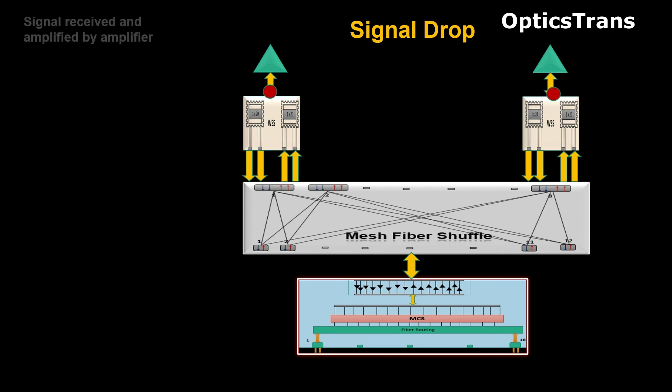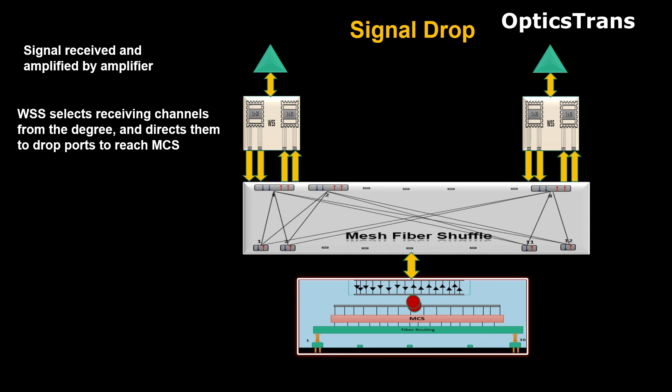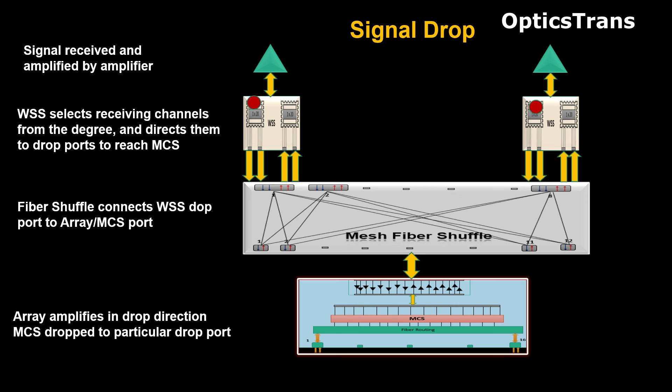Similarly in the drop direction, signal is received at the amplifier, and WSS selects channels and directs them to the correct drop port to reach the MCS. Array in the drop direction amplifies the signal, and signal drops on transponder.